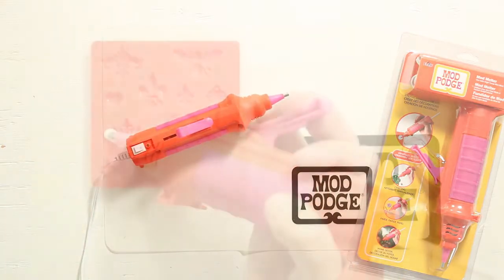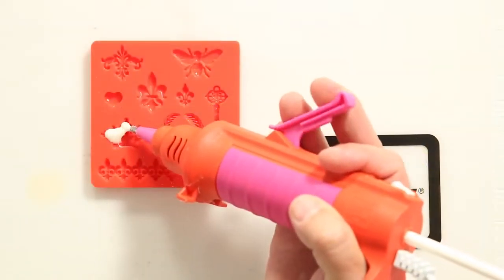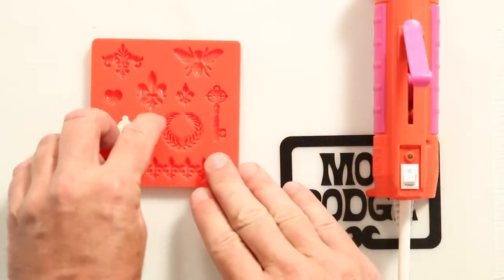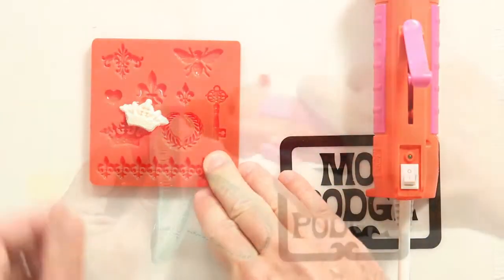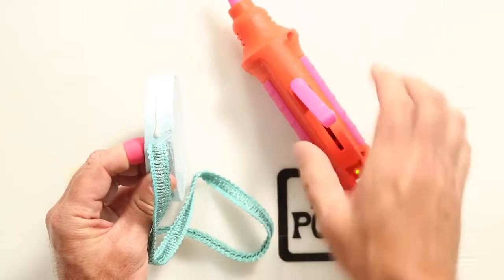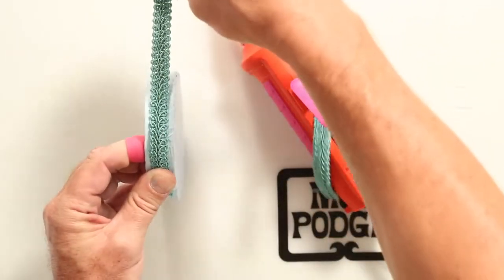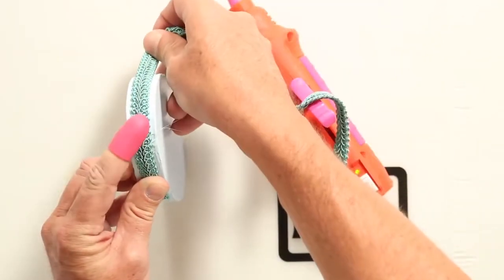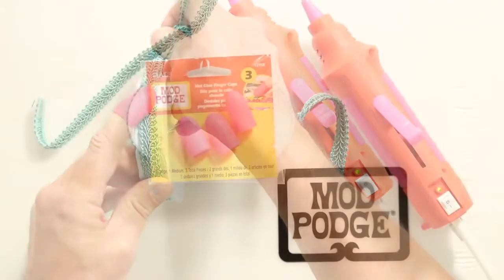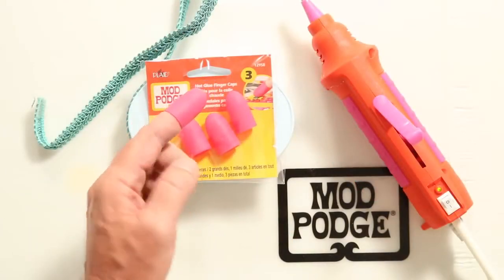Use the Mod Melter to fill Mod molds with Mod Melt sticks or for any hot glue needs. Protect your fingers from burns with hot glue finger caps. You get 3 in a pack.